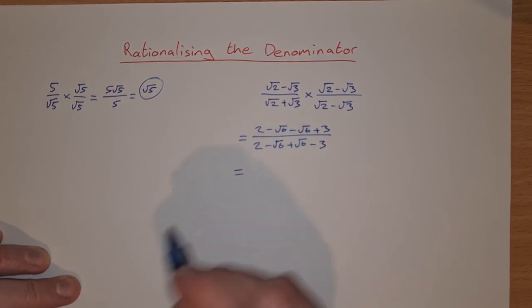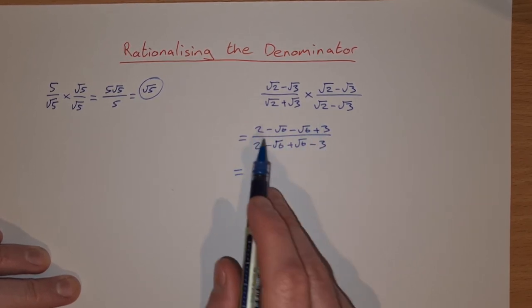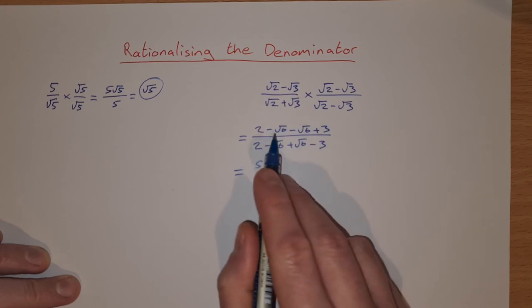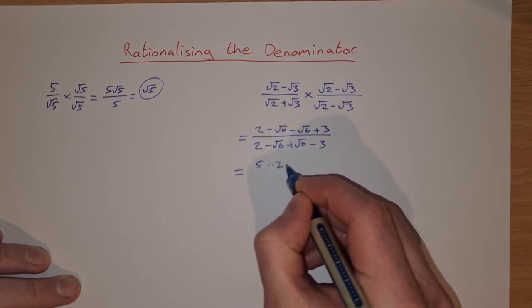We can simplify that a little bit further. So 2 plus 3 is 5. Minus root 6 minus another root 6, that's minus 2 root 6.